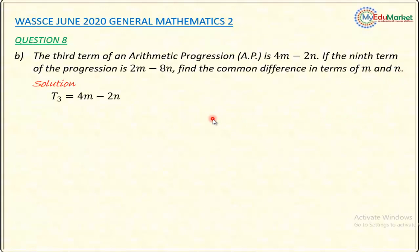So let's do that. The third term, remember, term in an AP is given by the formula A plus N minus 1D. N minus 1 is in the bracket, D is outside the bracket.